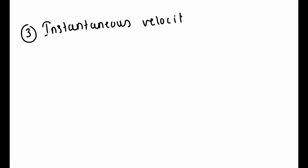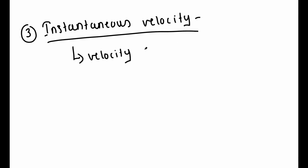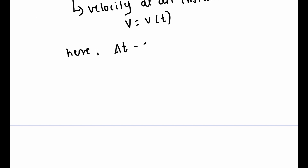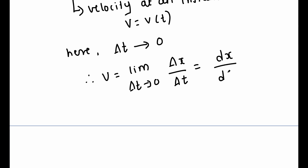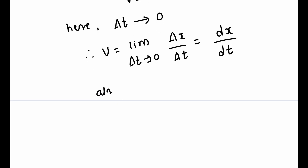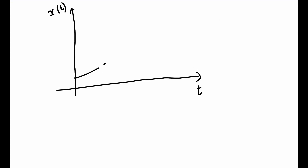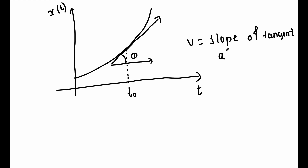Instantaneous velocity, or just velocity, refers to how fast a particle is moving at a given instant of time. This is achieved by shrinking the time interval to zero, and it is represented as V = limit as delta t tends to 0 of (delta x / delta t), which equals dx/dt. Just as with V_average, instantaneous velocity is also a vector. In a graph of x versus t, the instantaneous velocity at time t0 is the slope of the tangent to the curve at t = t0.